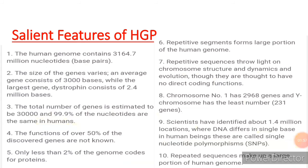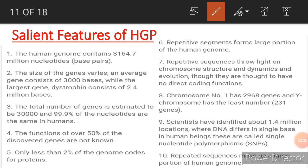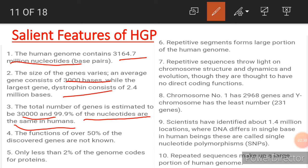The salient features of the human genome project are as follows. The human genome contains 3,164.7 million nucleotide base pairs. The size of genes varies; the average gene consists of 3,000 base pairs, while the largest gene, dystrophin, consists of 2.4 million bases. The total number of genes is estimated at 30,000. About 99.9% of nucleotides are the same in all humans, and the function of over 50% of the discovered genes is still unknown. Only less than 2% of the genome codes for proteins.